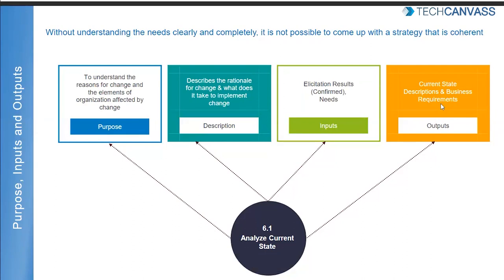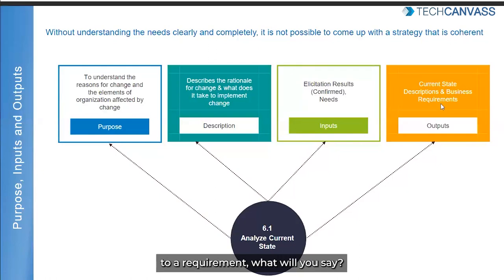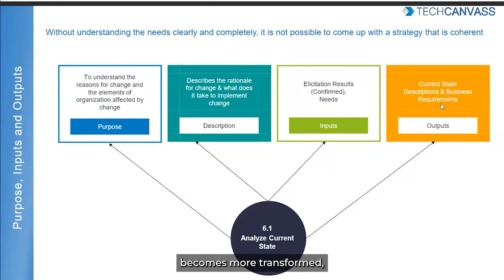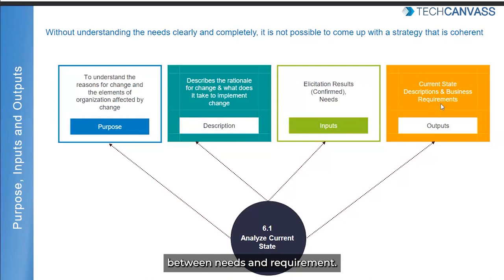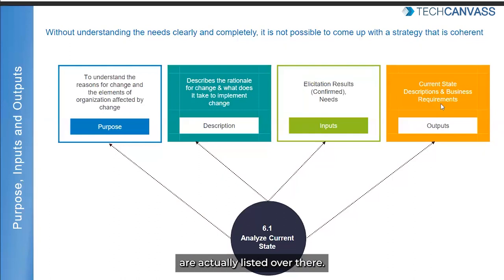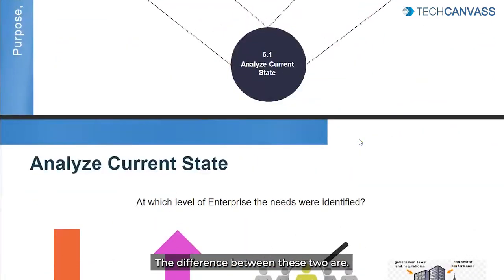My need is I want a shelter for my family — that's a very vague need. If you have to convert that to a requirement, what will you say? I need a penthouse, I need a duplex, I need a bungalow, I need a 3 BHK or 2 BHK — that's your requirement. A requirement becomes more transformed, more clear, more formal. That's the difference between needs and requirements. A requirement is nothing but a usable representation of your needs — that's what BABOK says, and that definition is listed in chapters one and two.